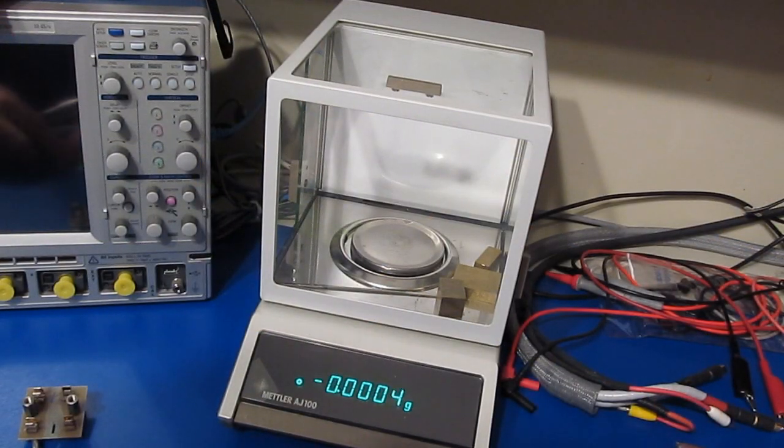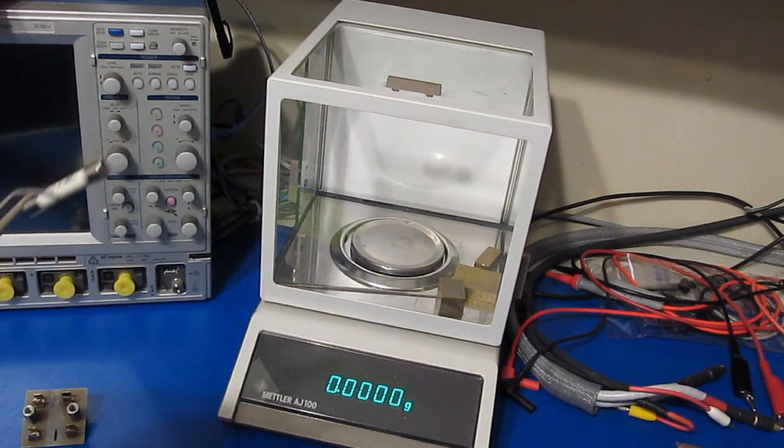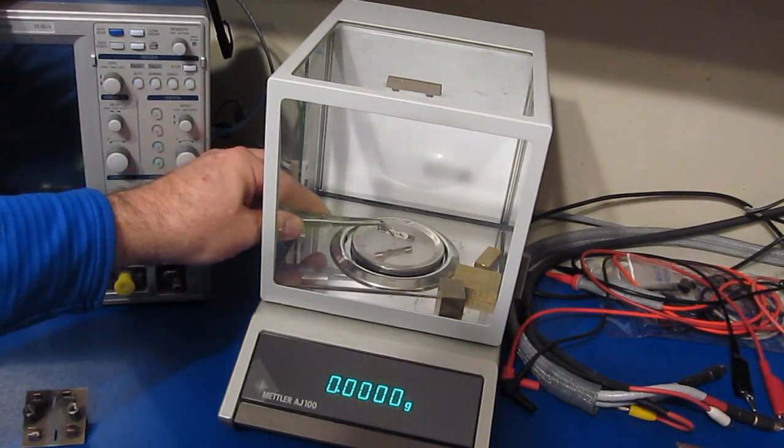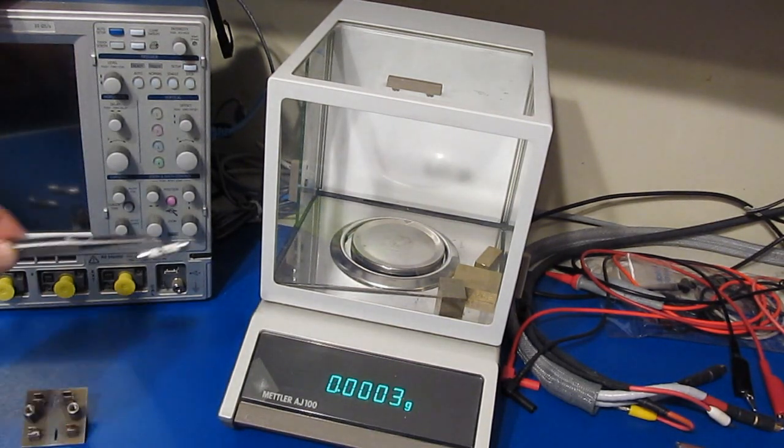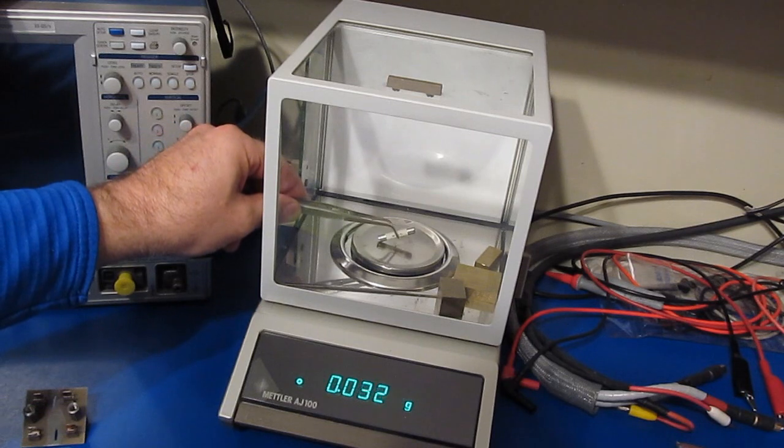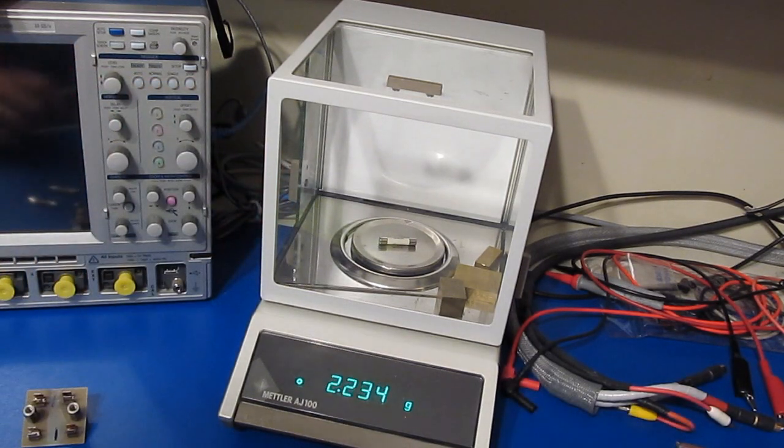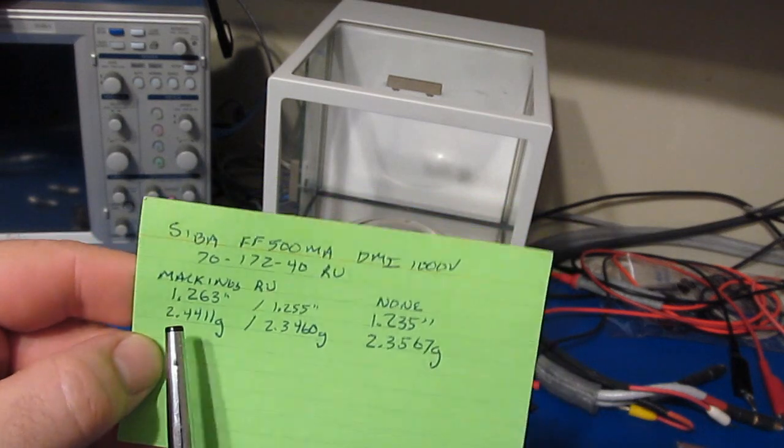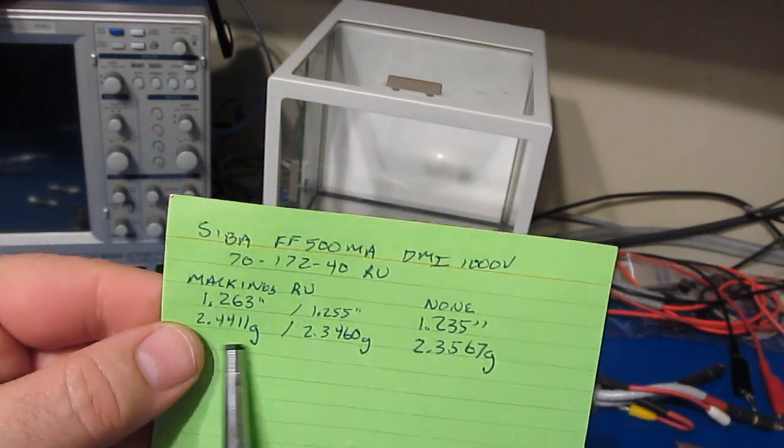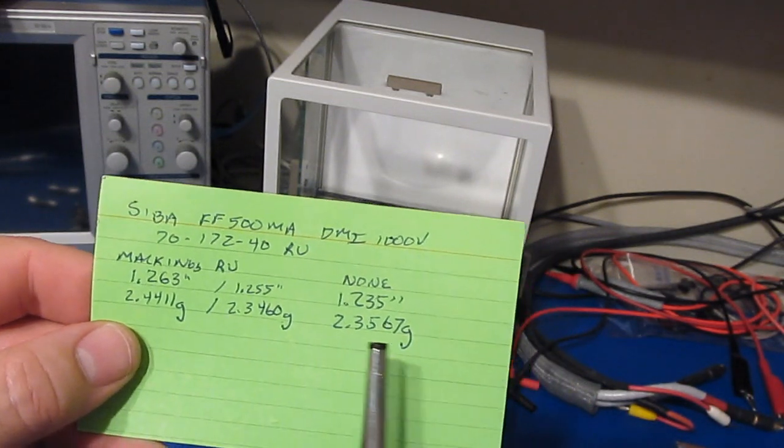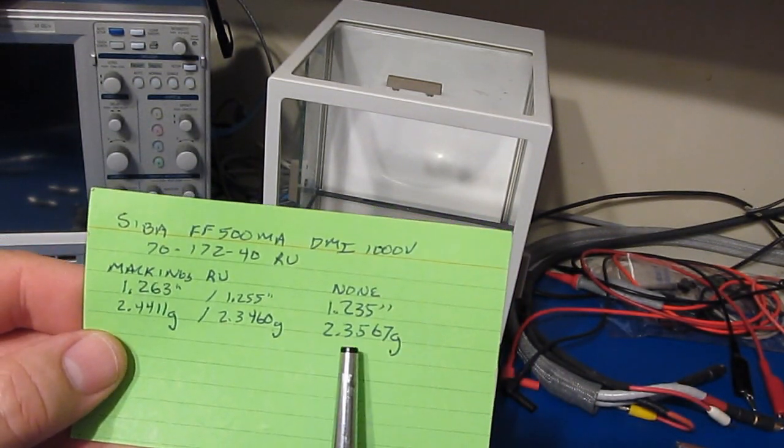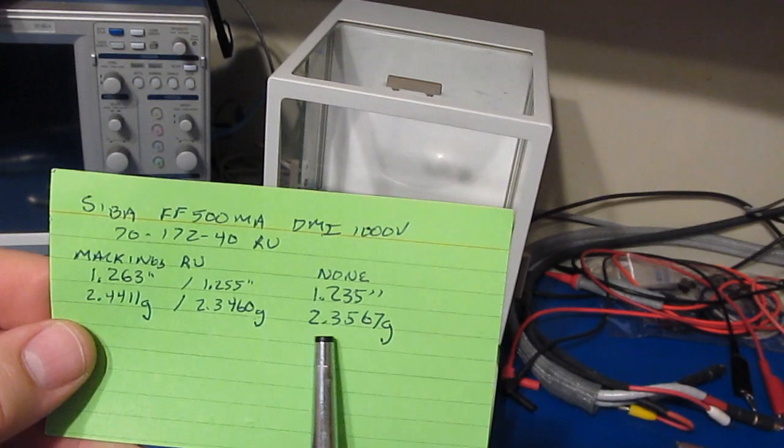Looking at the two fuses that I believe are actually produced by Siba, you can see they are roughly the same length. This fuse measures 1.235, this measures 1.263.